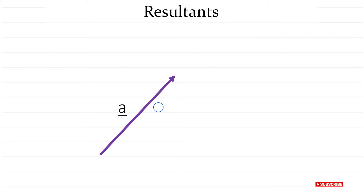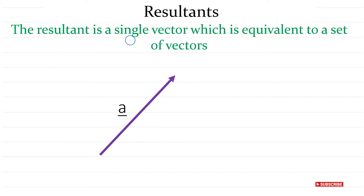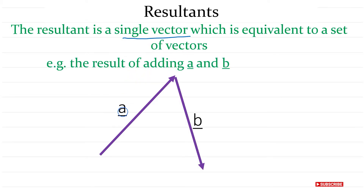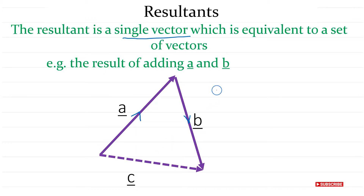Now we're going into resultants. The resultant is a single vector which is equivalent to a set of vectors. Let's say I have vector a going in one direction and vector b going in another direction. If I want the resultant vector, I join them and call it c. So c equals a plus b. It's all about pathways — you have to follow the path of the vectors.